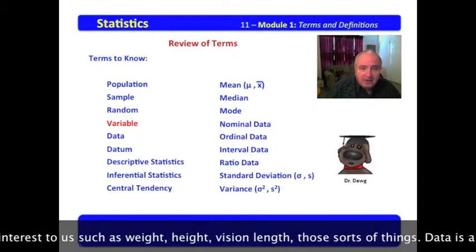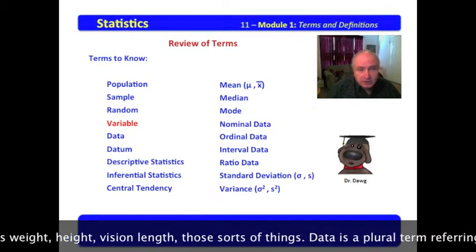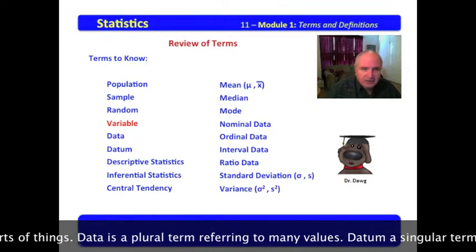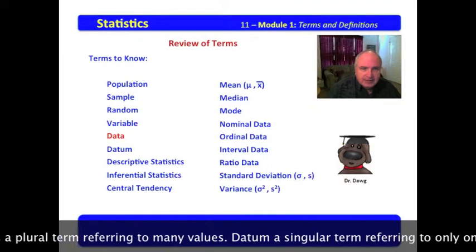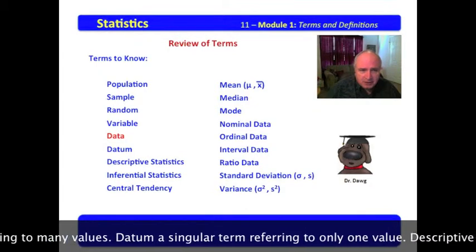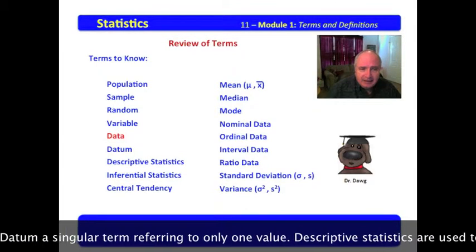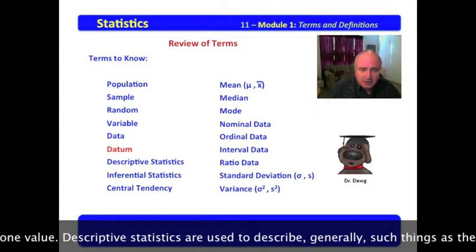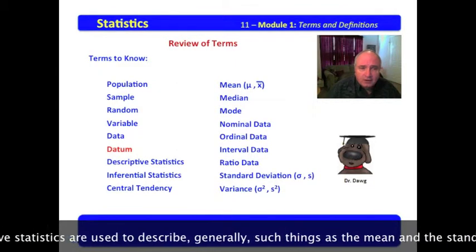Variable is a value of interest to us, such as weight, height, vision length, those sorts of things. Data is a plural term referring to many values. Datum is a singular term referring to only one value.